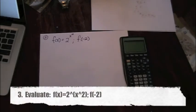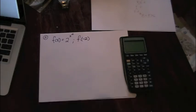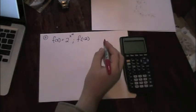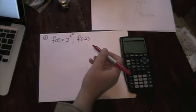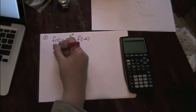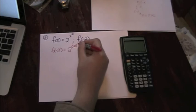The third problem asks you to evaluate a function f of x equals 2 to the x squared power for the value f of x equals negative 2. The first thing we need to do is plug our negative 2 in to our function. So f of negative 2 equals 2 to the negative 2 squared.